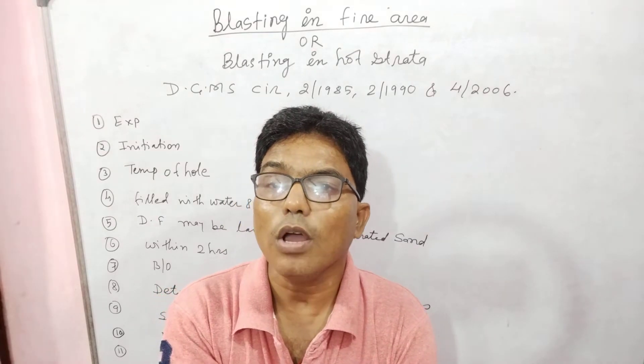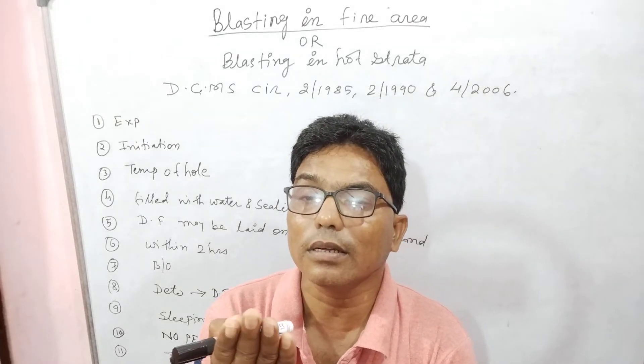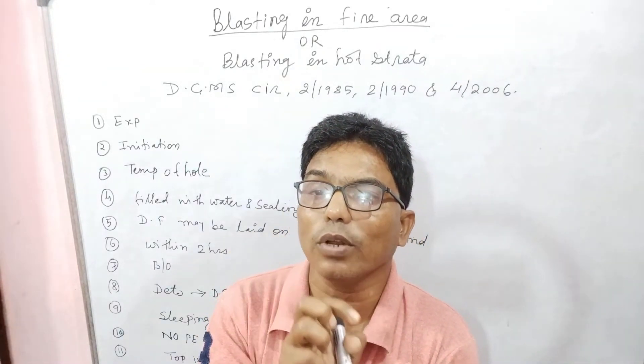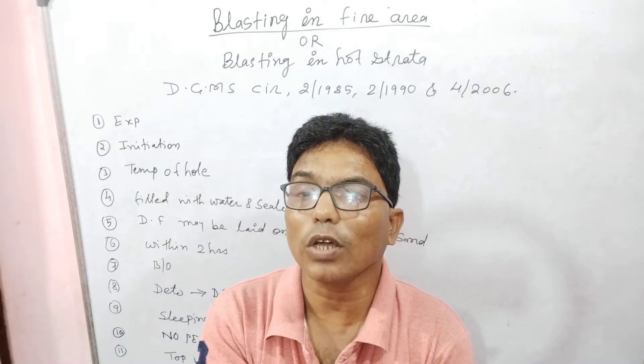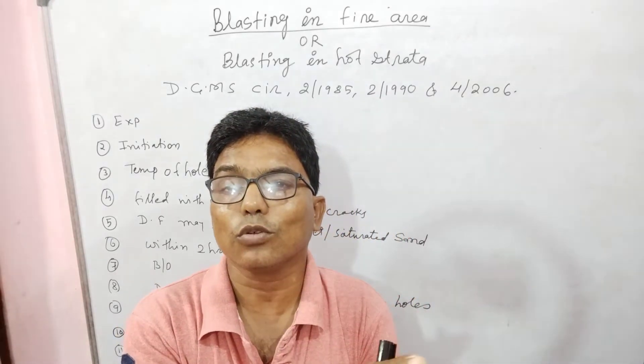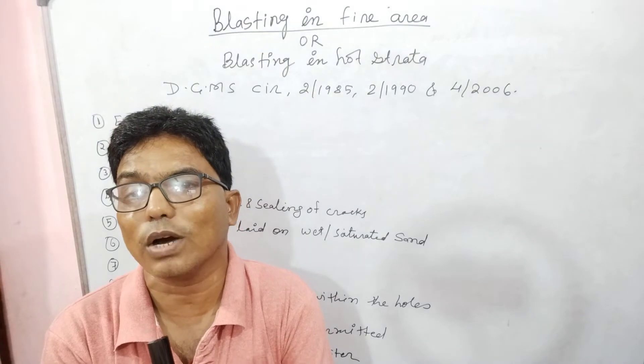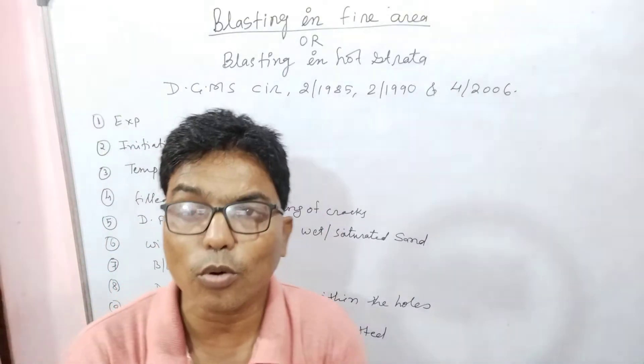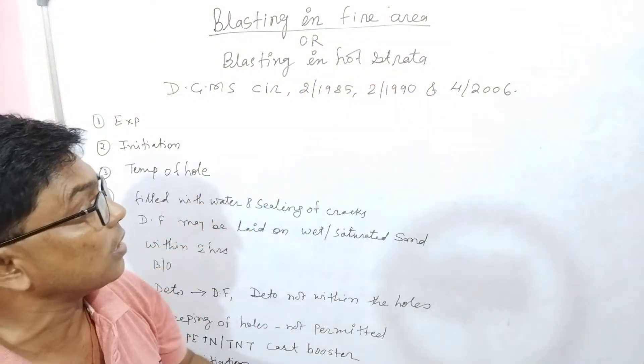We have to use some unique type of explosives and processing. The DGMS circular from 2006, 1990, and 1985 - the mining industry has given some suggestions. That is the circular.